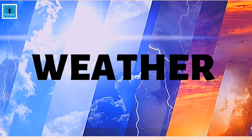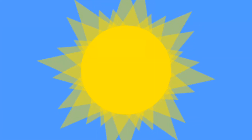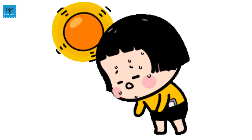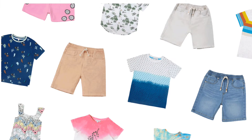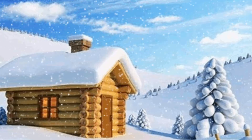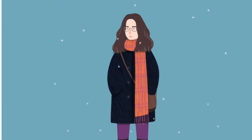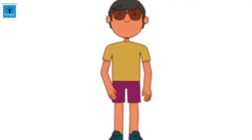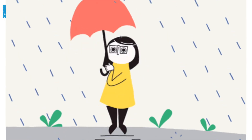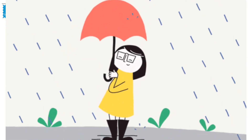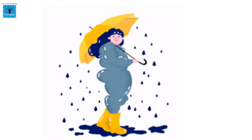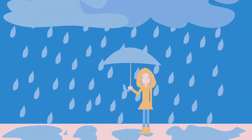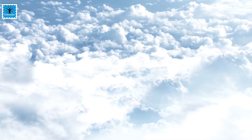Weather affects our lives in different ways. During summer when it is very hot, we switch on fans and ACs to keep ourselves cool and we wear light color clothes to reflect the heat. During winter we use dark color clothes and wrap ourselves in warm clothes to protect from cold. During the rainy season we use umbrellas and raincoats as it may rain any time.